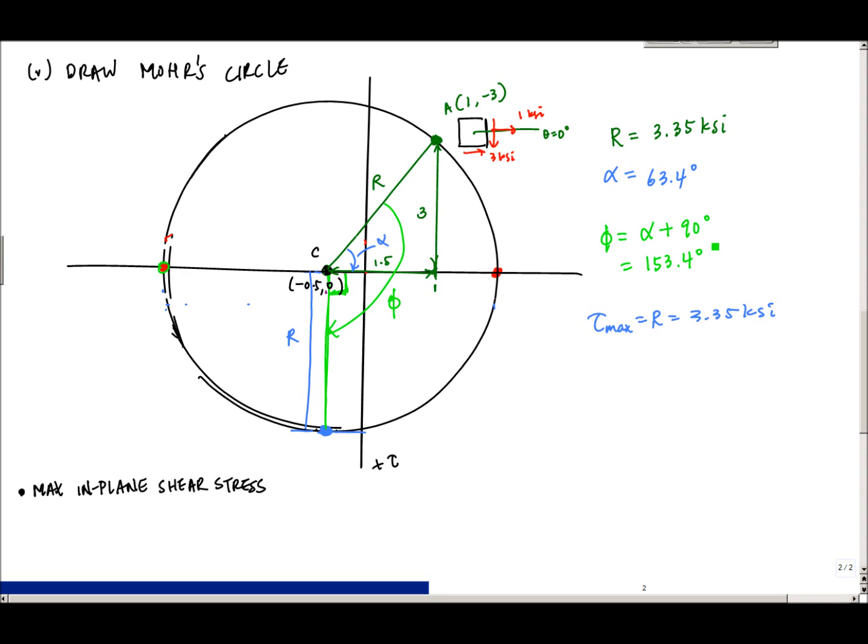And now if I want to know, so this is my angle I need to rotate clockwise in Mohr's circle. And so in real life, the angle theta s would just be phi divided by 2, which is 153 divided by 2 is 76.7 degrees clockwise in real life for my representative volume element.